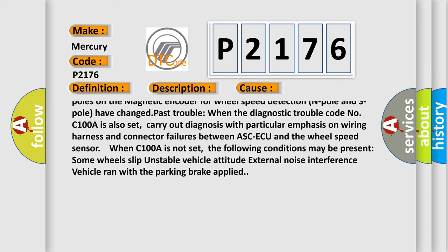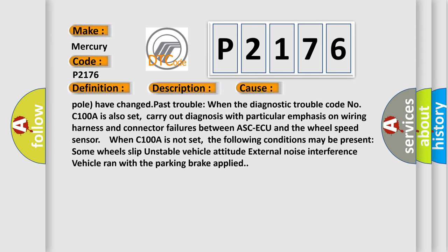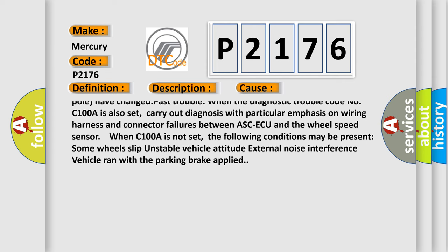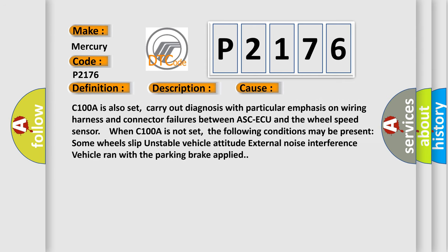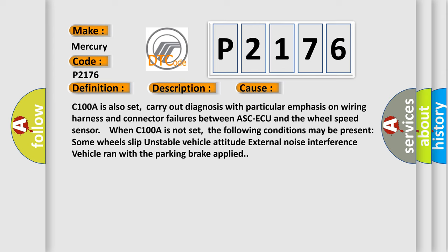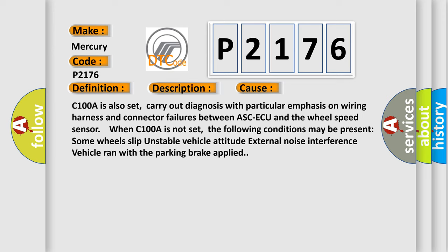Carry out diagnosis with particular emphasis on wiring harness and connector failures between ASC ECU and the wheel speed sensor. When C100A is not set, the following conditions may be present: Some wheels slip, unstable vehicle attitude, external noise interference, vehicle ran with the parking brake applied.